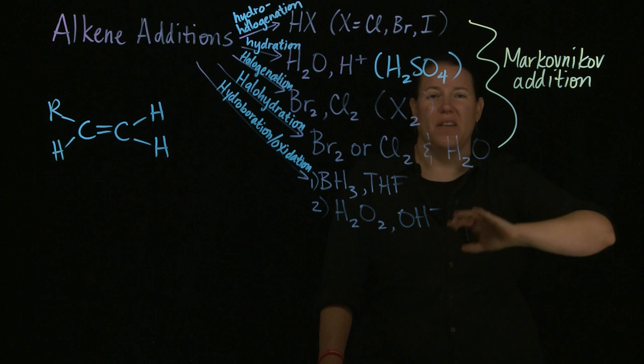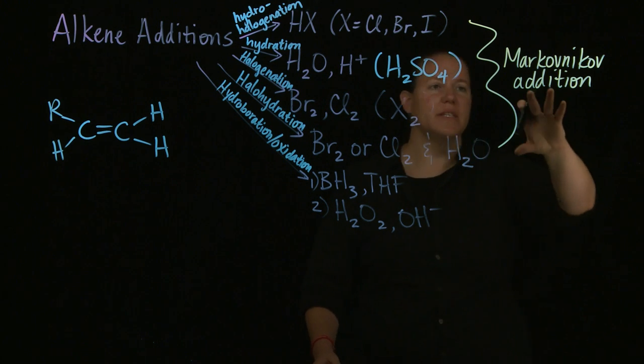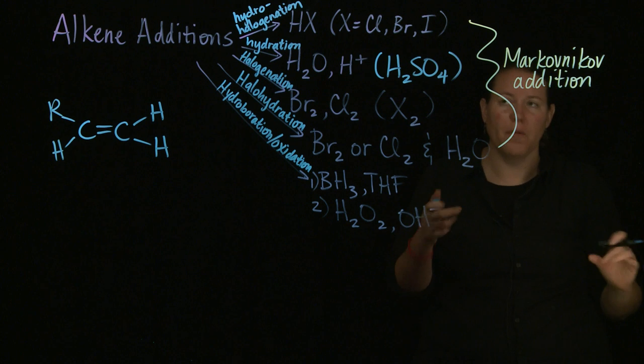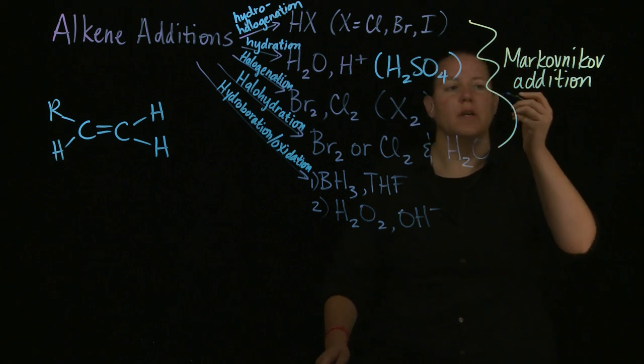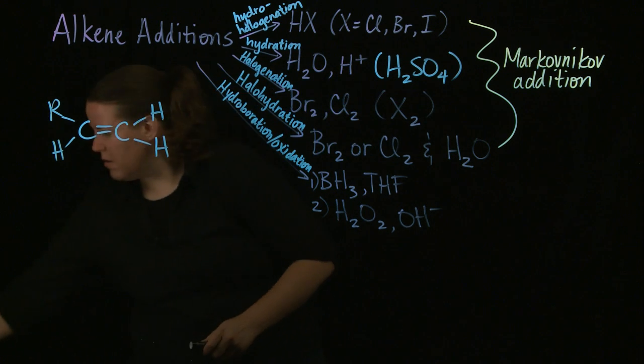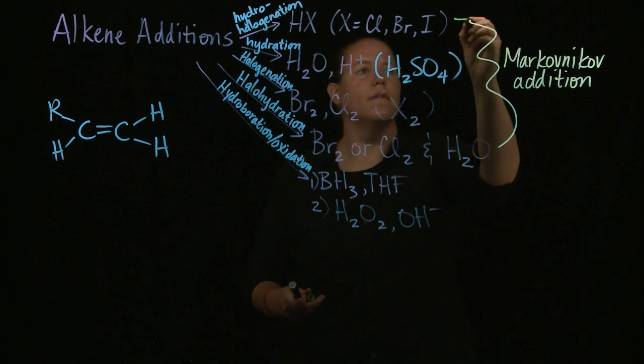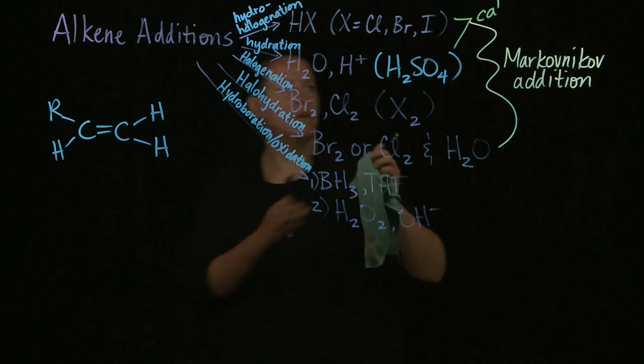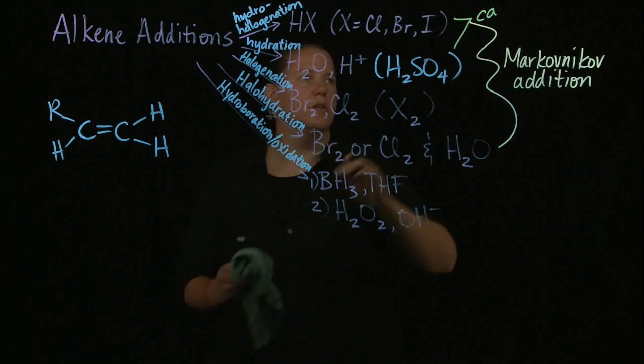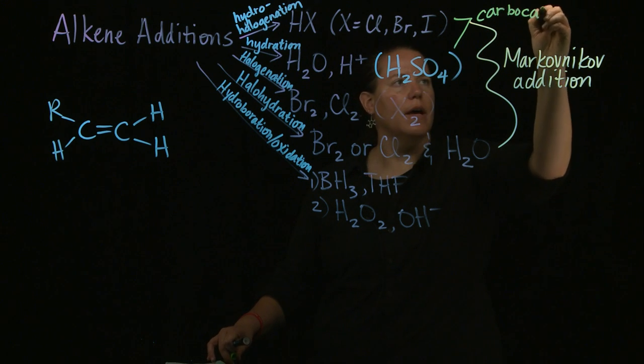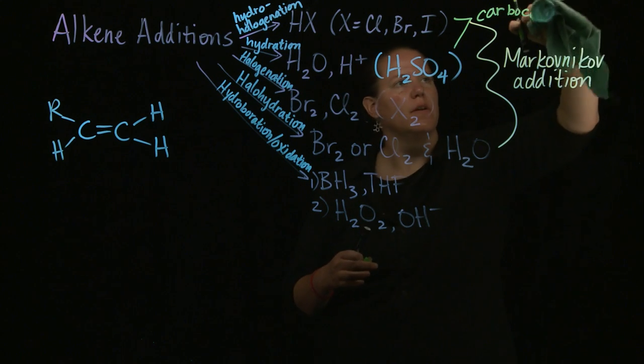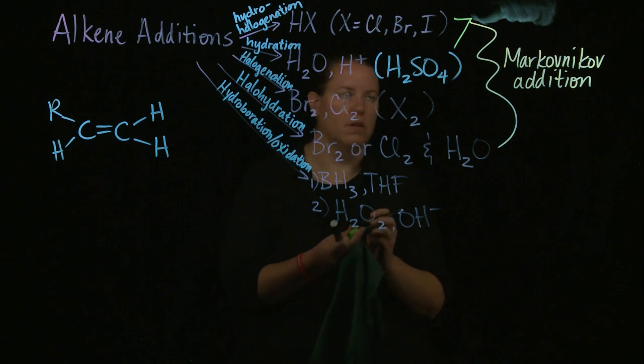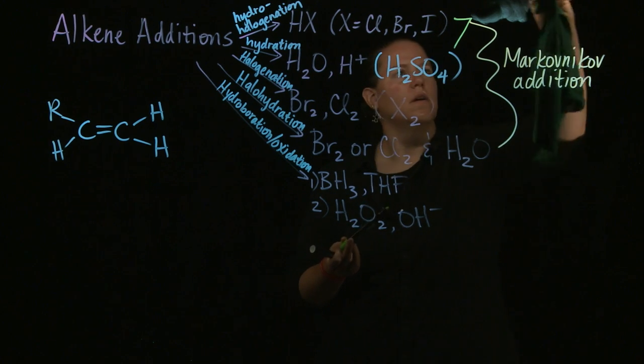Hydroboration oxidation, this one is the most unique of all of them in that it has anti-Markovnikov properties. The reason why it does that is because the BH3 forms a specific kind of intermediate that's interesting and different than the intermediates that are formed for these other ones. In terms of intermediates, it often helps to make a chart like this.